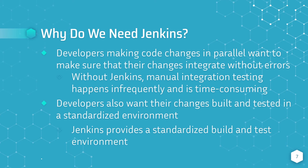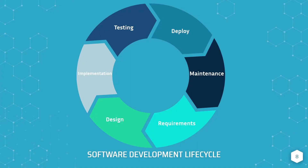Now that we know why we need Jenkins, let's understand where Jenkins fits into the software development process. The software development lifecycle begins with requirements definition or planning, followed by the design of the product. We then implement the product based on the design, and once we have an implementation, we test it to ensure it meets the requirements defined at the beginning of the lifecycle. Once the product is successfully tested, we deploy it to the customer and perform maintenance or operations on it.